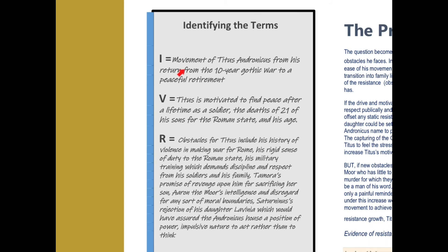Then the resistance of course would be the obstacles, which include that he's a violent man. He's been making war—that's not easily stopped. He also has a rigid sense of duty to the Roman state. His military training demands discipline and respect from his soldiers and family. All that gets in the way of his peace, as you see when he attacks his own family.